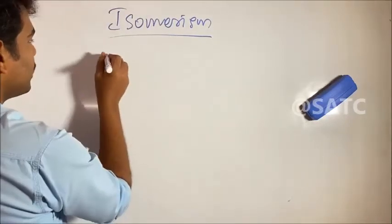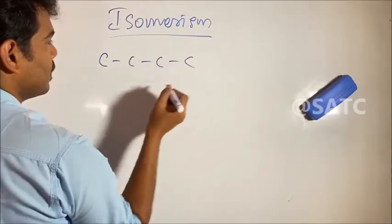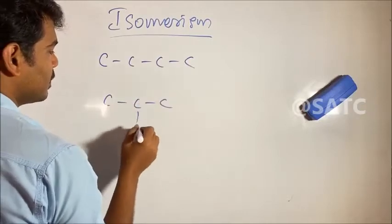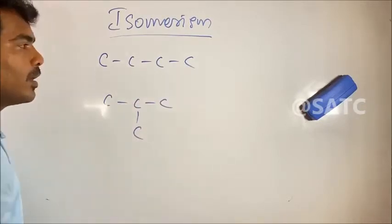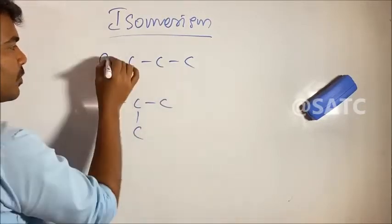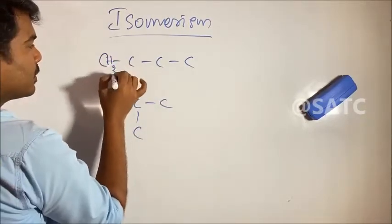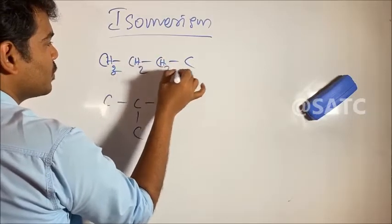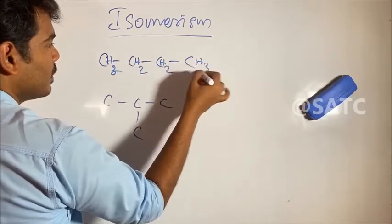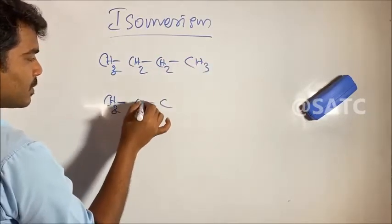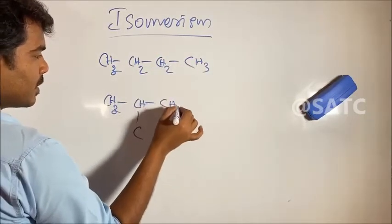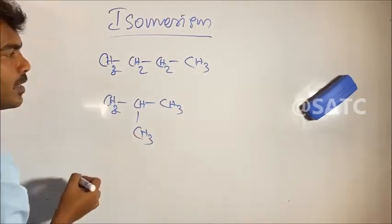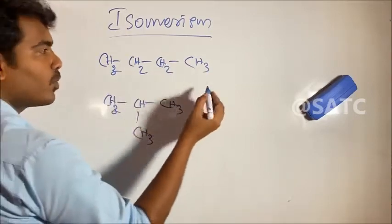For example, a chain of carbons: CH3, CH2, CH2, CH3. And another arrangement: CH3, CH3, CH3, CH3. We have a molecular formula to count here.